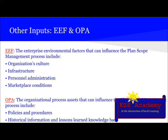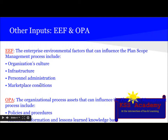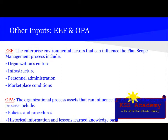The other inputs are enterprise environmental factors and organizational process assets — in short, EEF and OPA. For EEF, the main factors that influence Plan Scope Management include organizational culture, infrastructure, personnel administration, and marketplace conditions. For organizational process assets that influence Plan Scope Management, these include policies and procedures, and historical information and lessons learned knowledge base. We have to take these into account when developing the scope management plan.